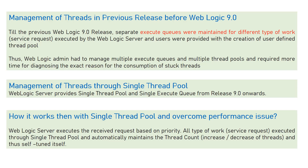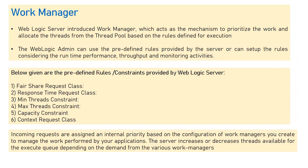If you want to define a priority for your applications — meaning you want a larger number of threads from the self-tune pool for some applications and fewer for others — then a feature called a Work Manager has been introduced. For example, if you have two applications and want 70% of threads assigned to application A and 30% to application B, that kind of tuning you can do with the help of Work Manager.